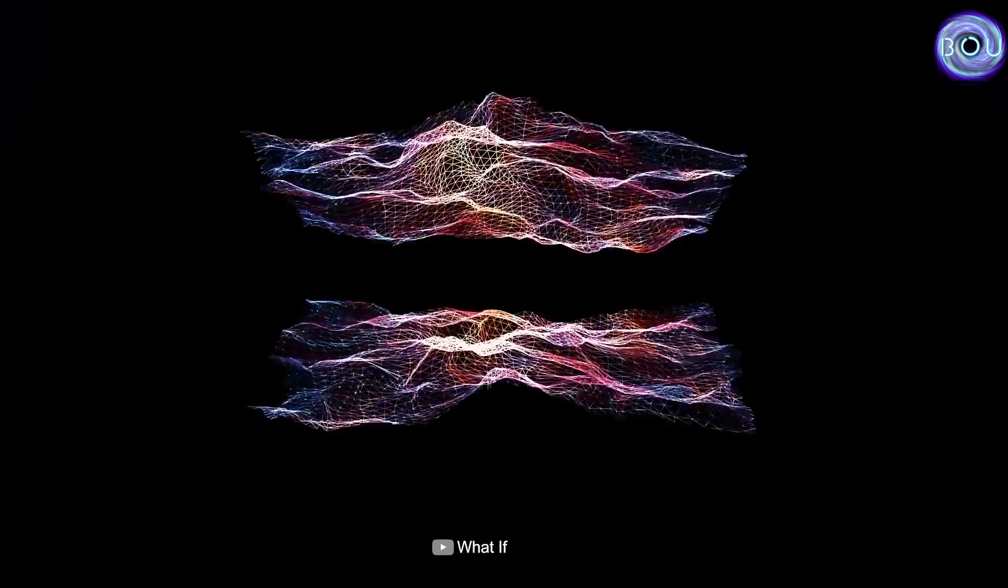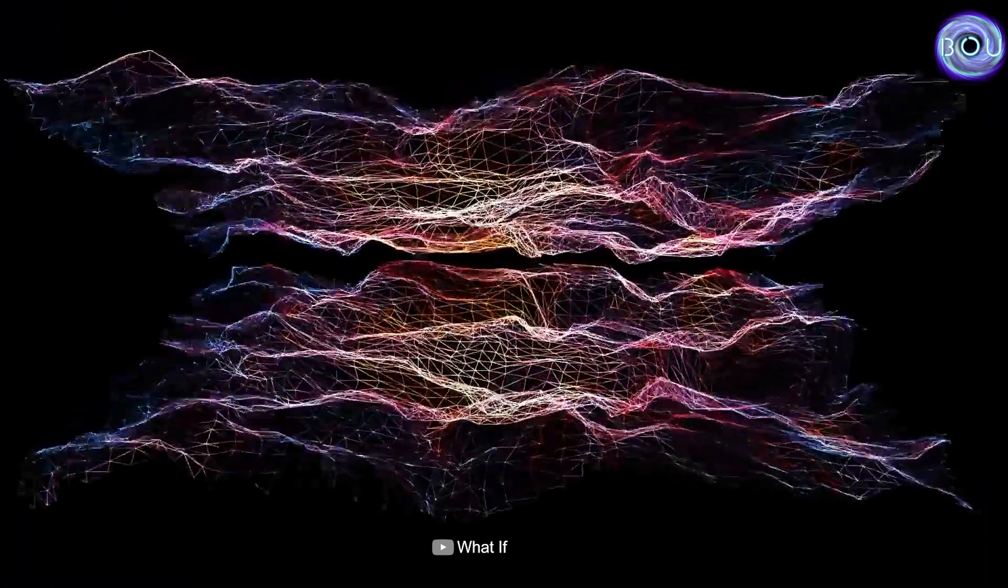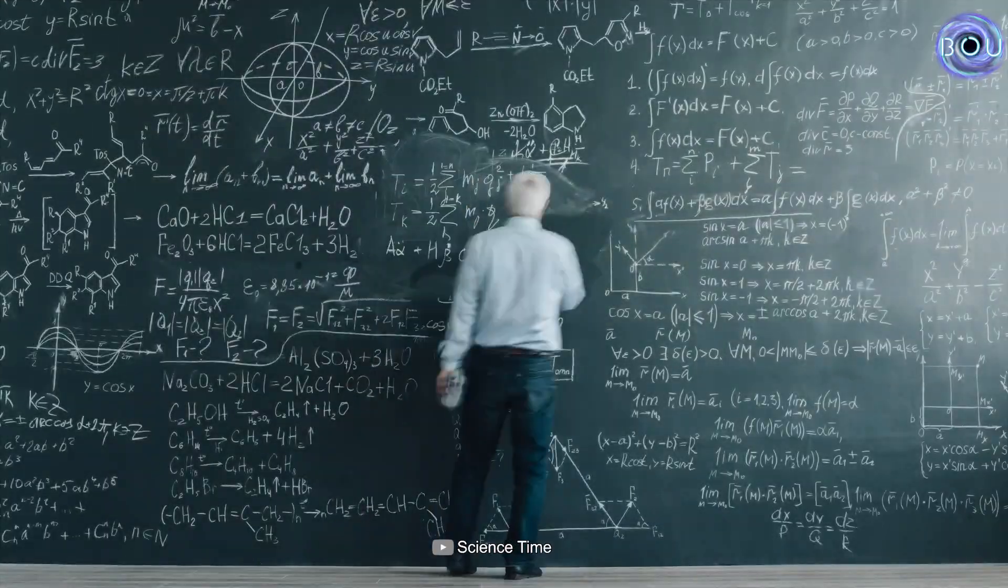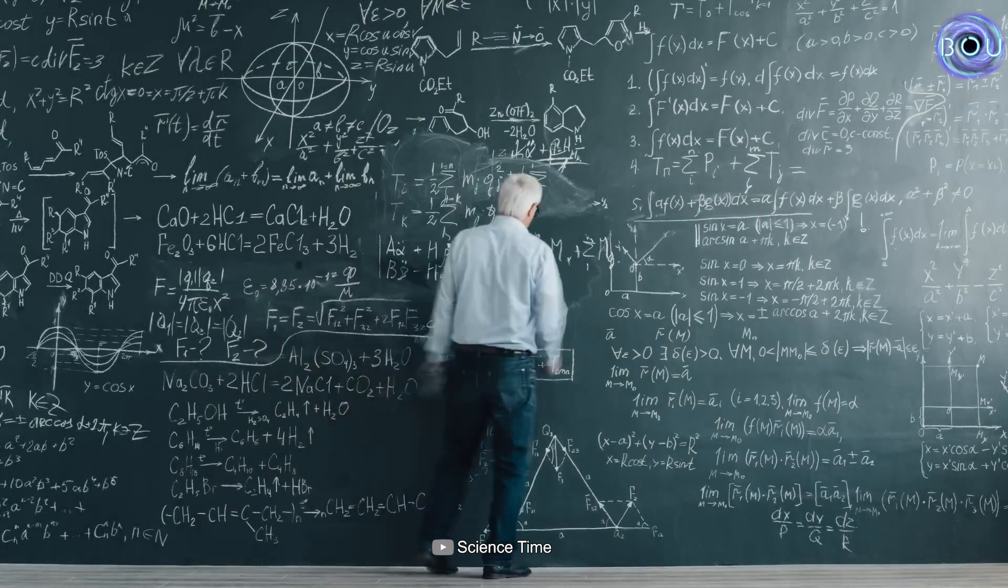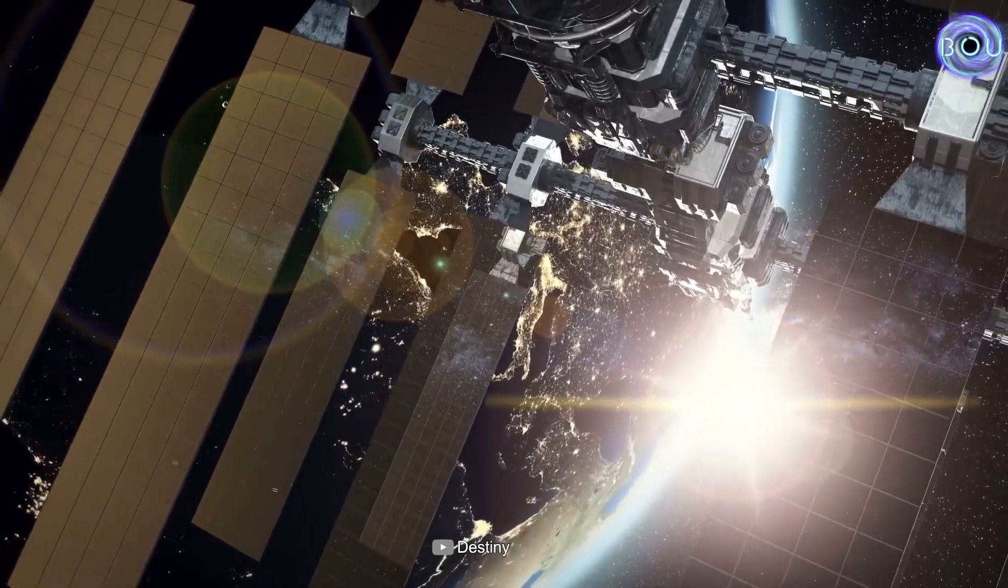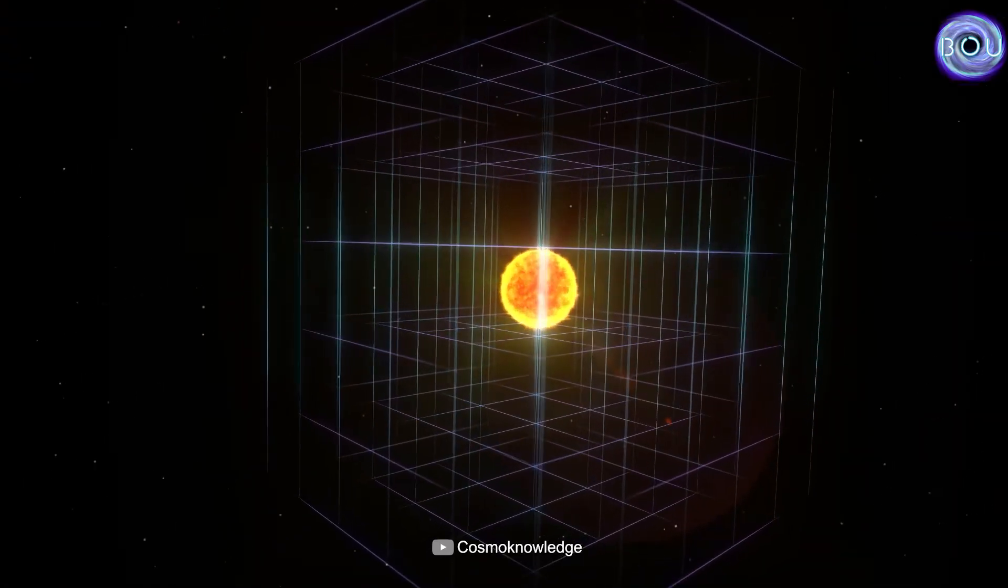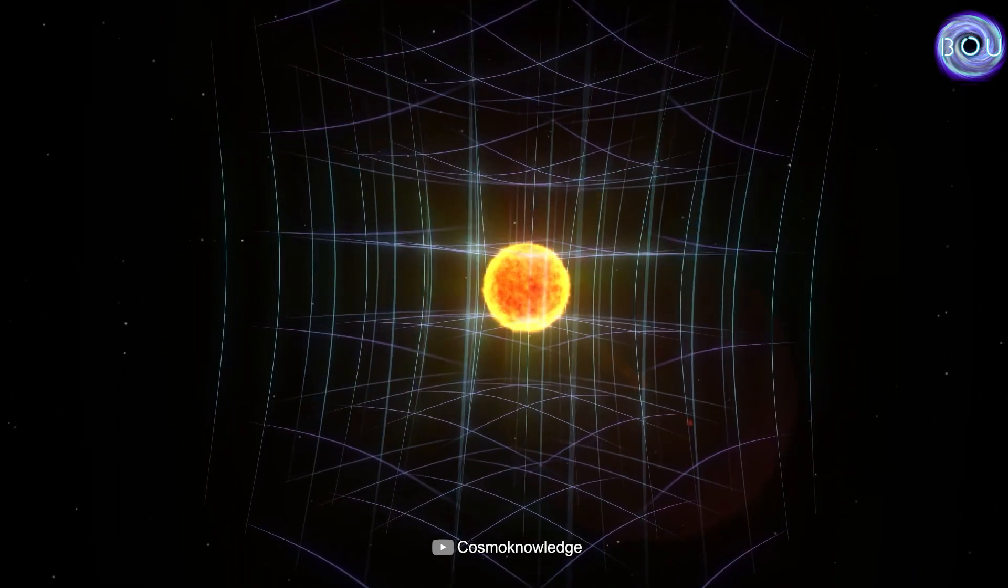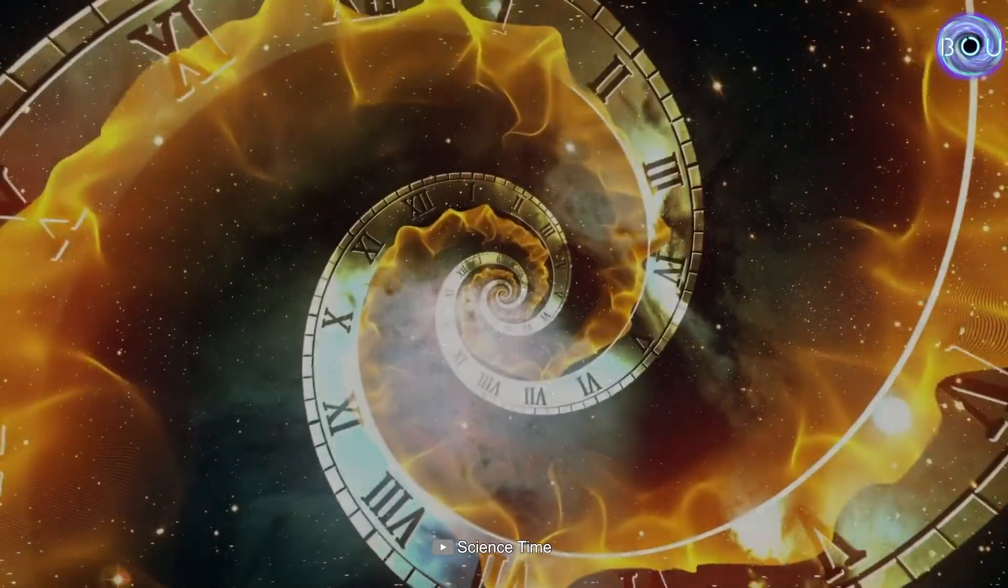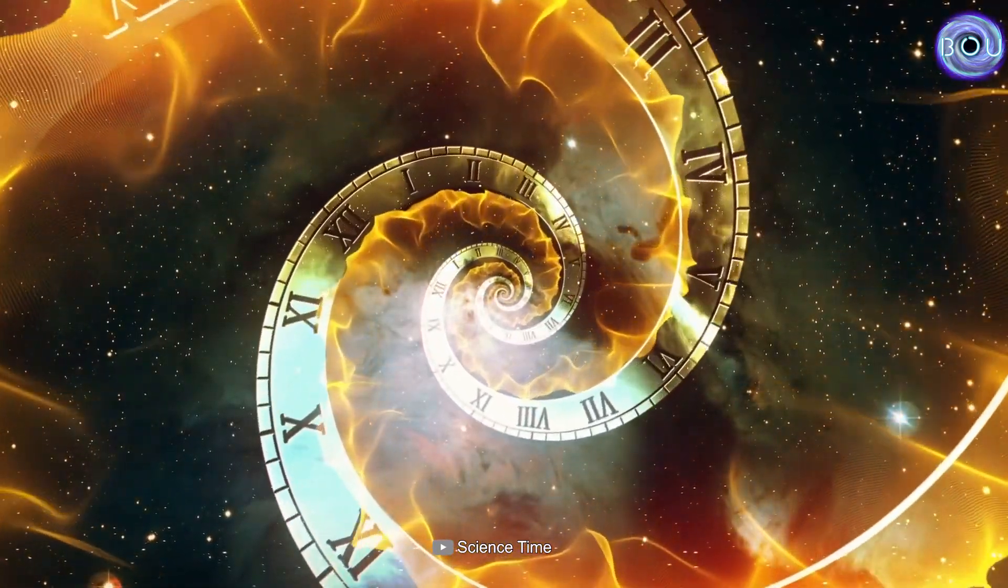Now that we have understood the nature of space-time and gravitational fields, let's examine together what relevance these topics have to GPS satellites. As we mentioned, a massive object can bend the space-time around it. When space-time is curved, time also becomes curved.